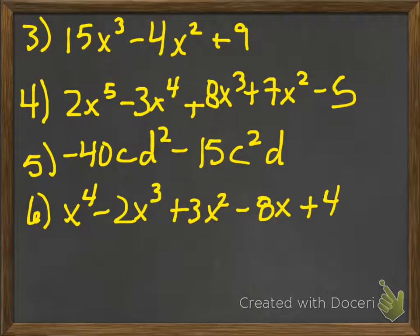Continuing on. Here are your answers for 3, 4, 5, and 6. Number 3, all you've got to do is add — you're combining the like terms. So 12 plus 3 was 15; 4 minus 8 was negative 4; and negative 9 plus 18 was 9.